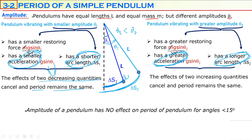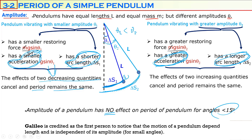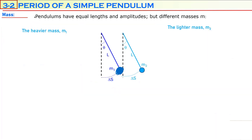This tells us that the amplitude of the pendulum has no effect on its period, for angles less than 15 degrees. Galileo was the first person to notice that the motion of the pendulum depends on its length and is independent of its amplitude. The third parameter we study is mass.